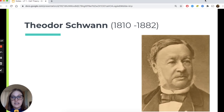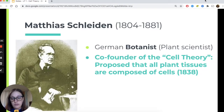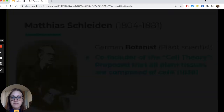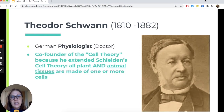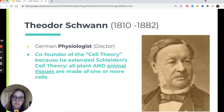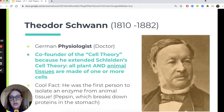Theodor Schwann was studying at the exact same time as Matthias Schleiden — in fact, they collaborated and shared resources via letter. Schwann was a German physiologist and human doctor. He was also a co-founder of cell theory because he recognized that humans and other types of animals are also made of cells. He expanded upon Schleiden's principle: not only are all plants built of cells, but so are all animals. Cool fact: he was the first person to isolate an enzyme from animal tissue — specifically pepsin, the enzyme found in the stomach.